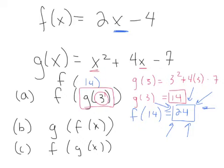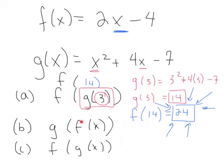Part B asks for g(f(x)). Here x is already in f(x), so we're not substituting a number. What is f(x)? It's 2x - 4. So this problem wants us to do g(2x - 4) — simply replace f(x) with its definition. That's where we'll pick up tomorrow.